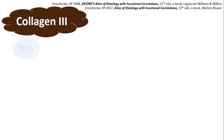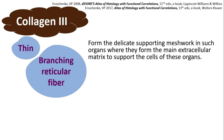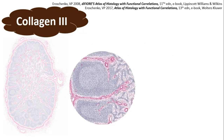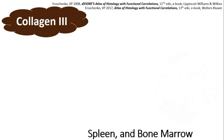Collagen 3 consists of thin branching reticular fibers which form a delicate supporting meshwork in organs, where they form the main extracellular matrix to support the cells of those organs. Consider the structure of the lymph node — zooming in, we see many lymphocytes and phagocytic cells present between black-colored string-like structures, which are actually collagen 3 forming a supporting meshwork. This type of structure is also present in the spleen and bone marrow.